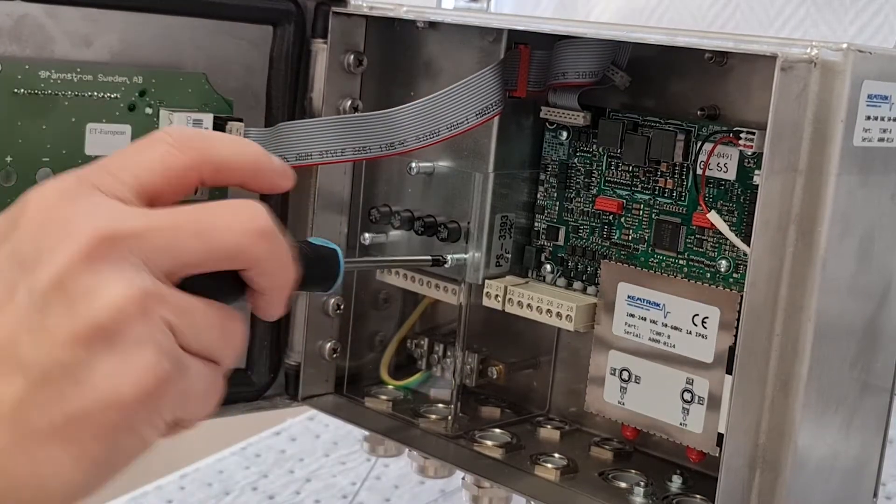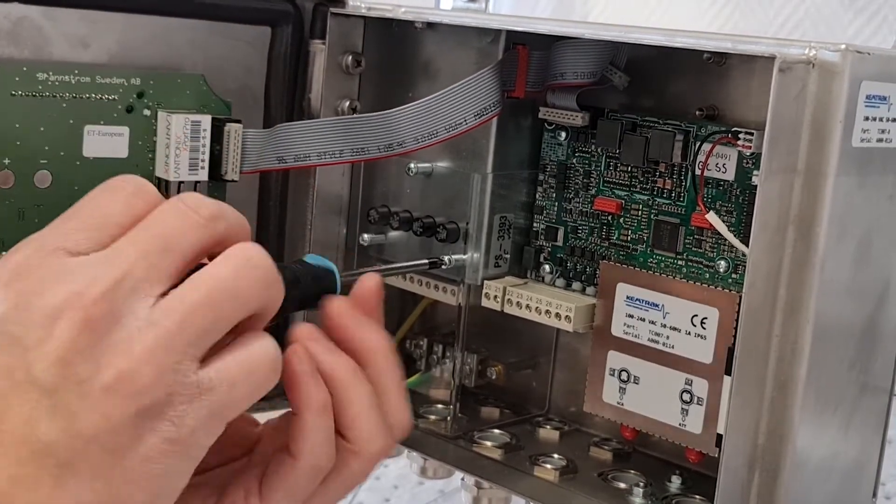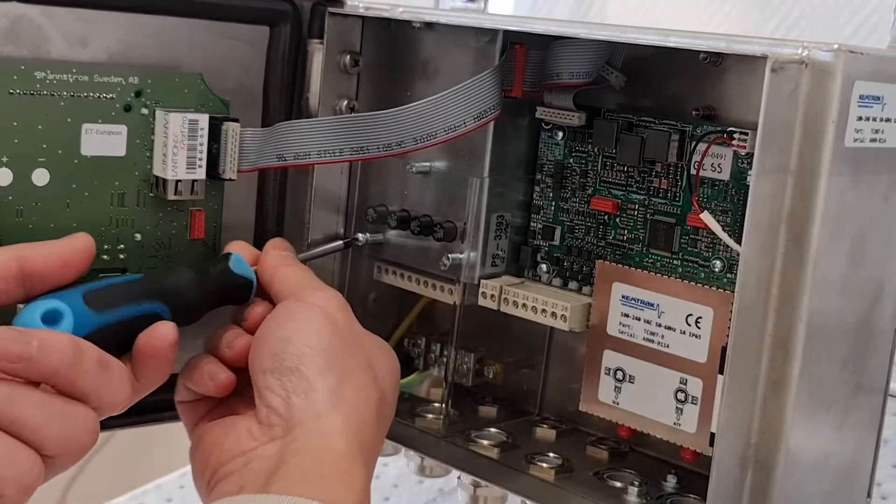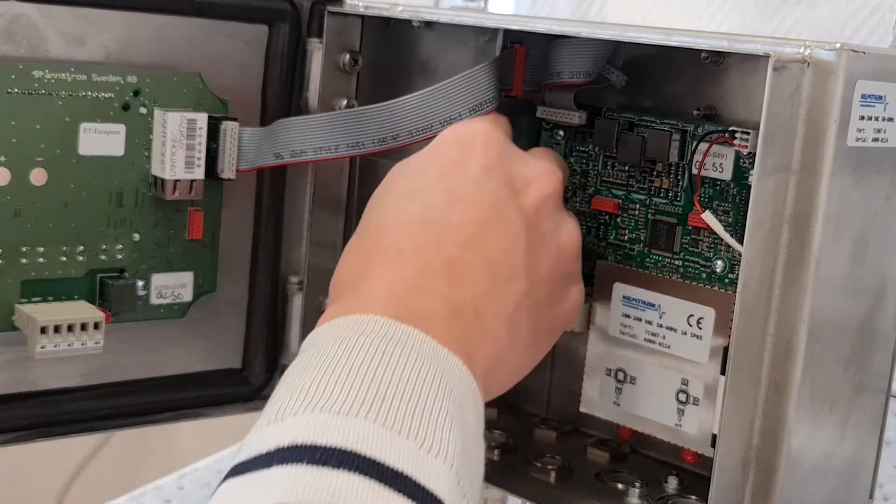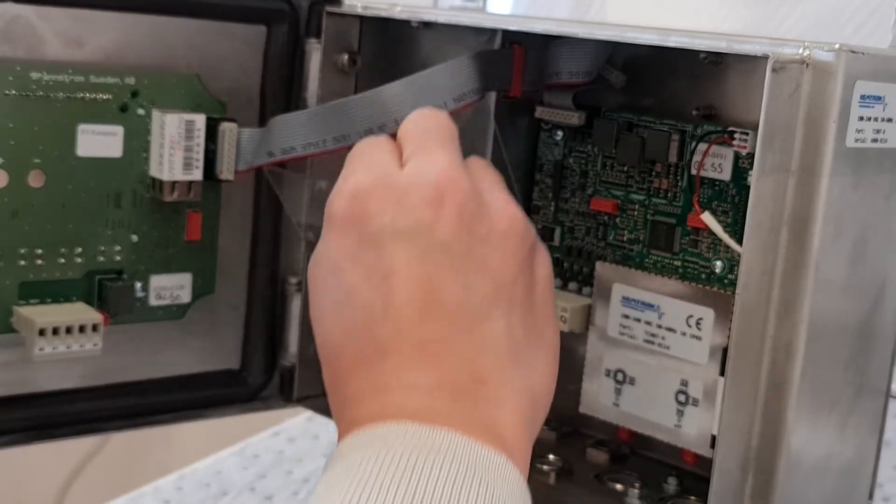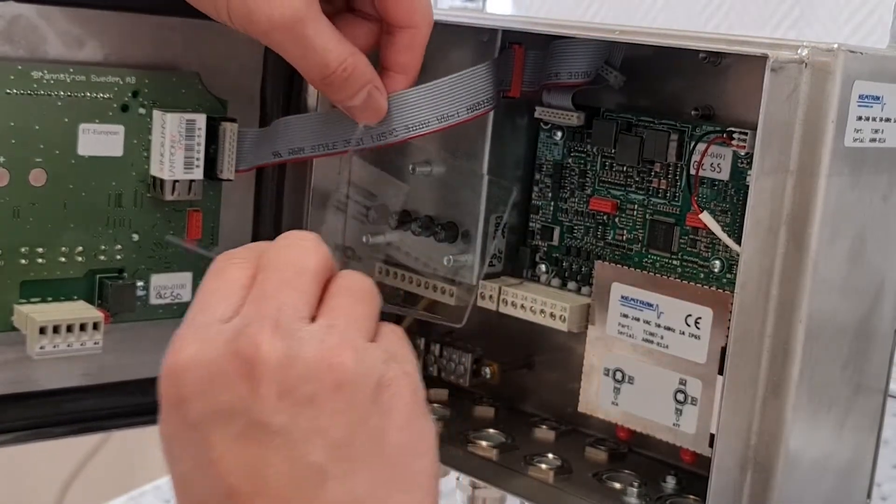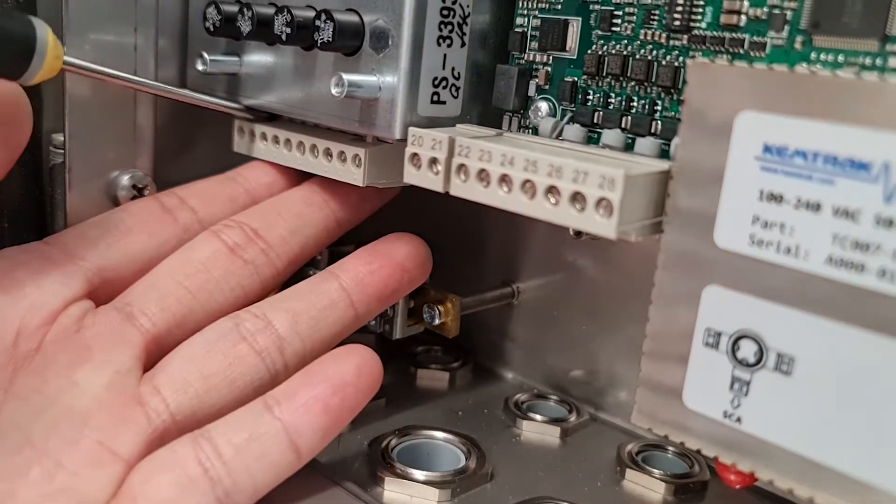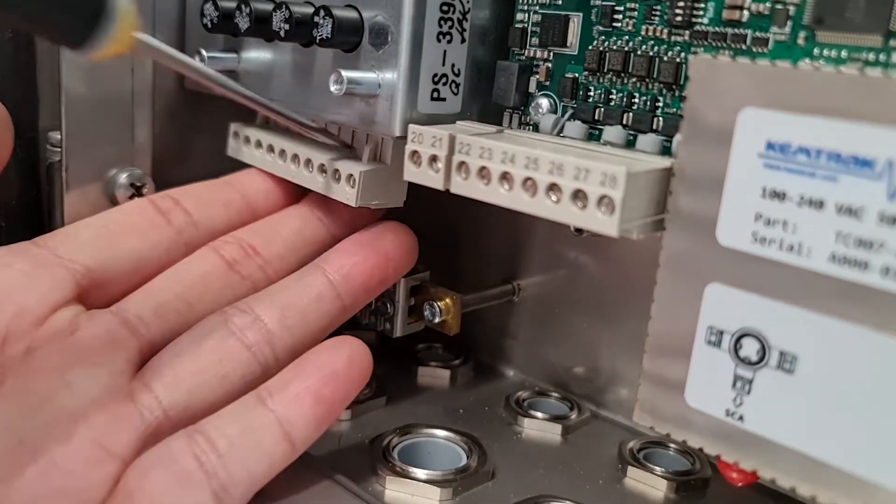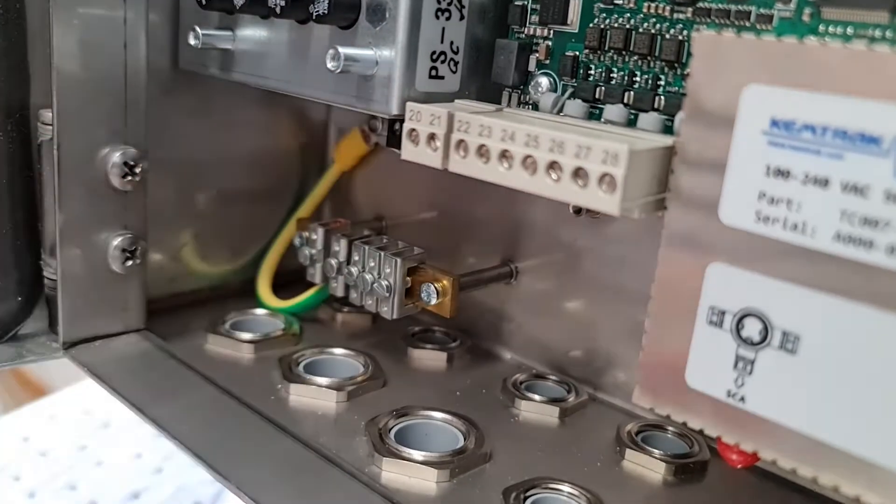The high voltage connections are protected by a clear cover that must first be removed. The power connector is located under the relay output connections. Remove these connectors first to gain access.